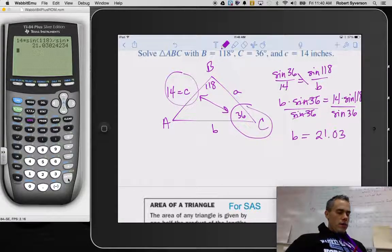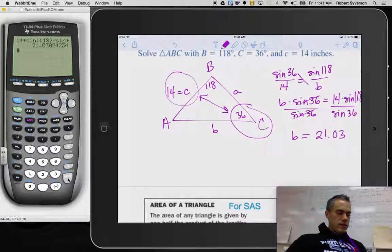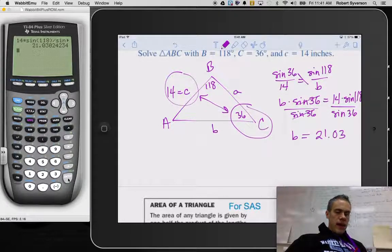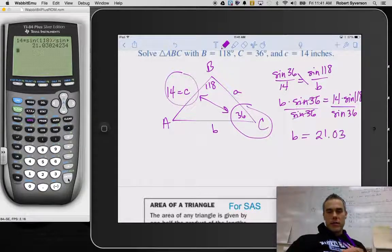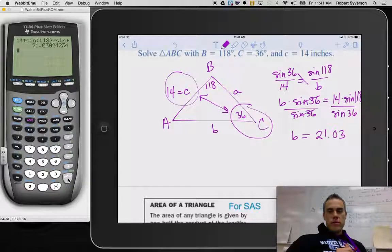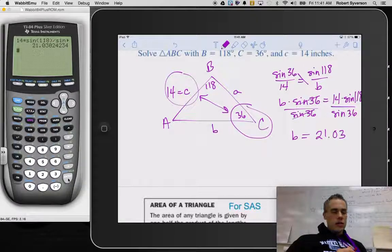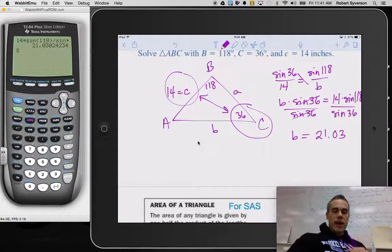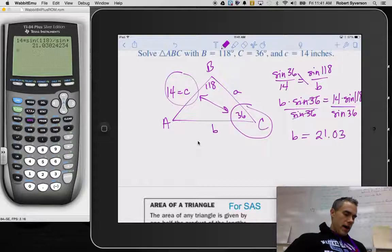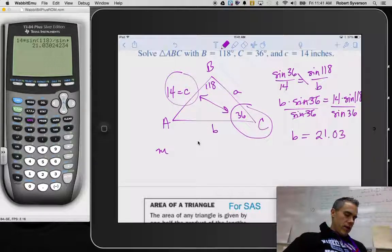Now, I still have not found, so that's side b. I still have not found angle a or side a. And I have neither of the parts of that angle side pair. So what I'm going to do is I'm going to use the triangle angle sum theory, which says that all of the angles in a triangle add to 180 to find that missing angle a.